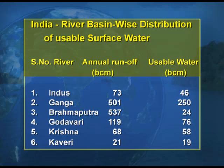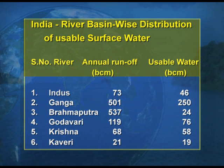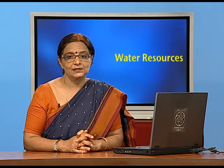The table has two columns: annual runoff and usable water of different rivers. Brahmaputra has the maximum annual runoff of 537 billion cubic meters, followed by River Ganga at 501 billion cubic meters. However, comparing usable water, Brahmaputra has only 24 billion cubic meters whereas Ganga has 250 billion cubic meters — more than 10 times. Find out the reasons why River Ganga has a higher percentage of usable water compared to Brahmaputra.